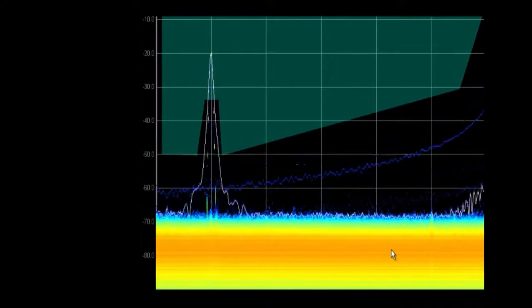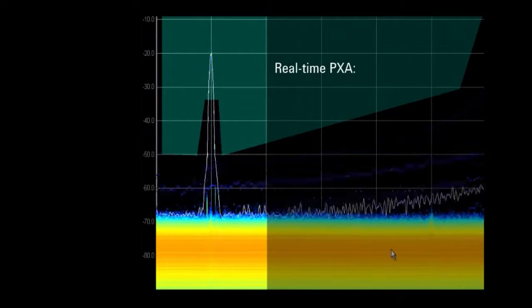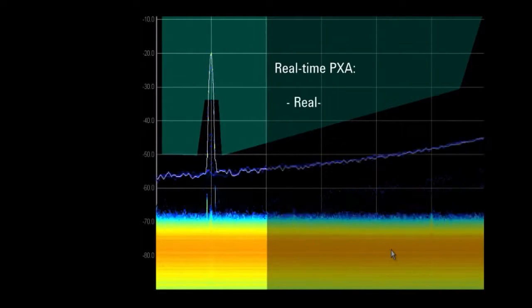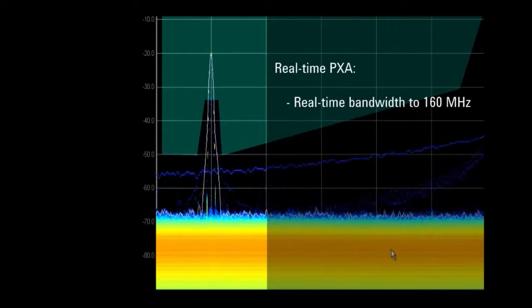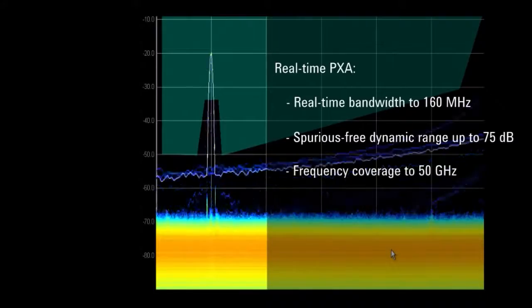Measurement speed only really counts when it's combined with fundamental performance to match. The real-time PXA sets new standards in real-time bandwidth at 160 megahertz, dynamic range of 75 dBc, and frequency coverage to 50 gigahertz.